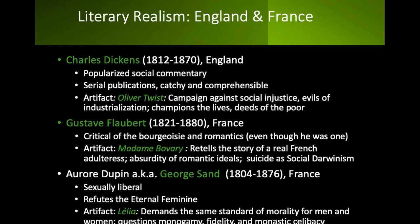Another influential French author is Aurora Dupin, a.k.a. George Sand. Aurora wrote under a male pen name, but she didn't do much else to hide her identity in society. She married wealthy, divorced, and had many affairs — one of her lovers was Chopin. So in her life and in her writing, she challenged ideas of what female life ought to look like. This is also a strong theme in her novel Lélia. The novel features a woman who is promiscuous but unsatisfied by her sexual exploits, and the story advocates for female sexual liberation and refutes the romantic notion of the eternal feminine. Lélia suggests that married women, like prostitutes, were slaves to male desire, and she demands that the same standard of morality for men should be applied to women.